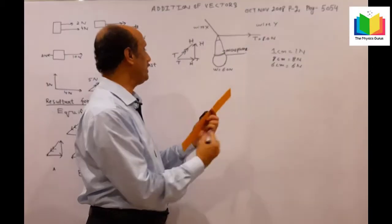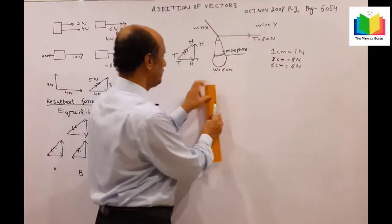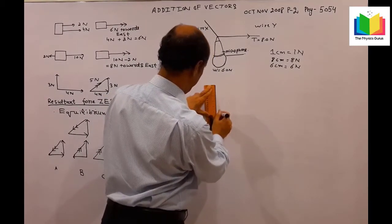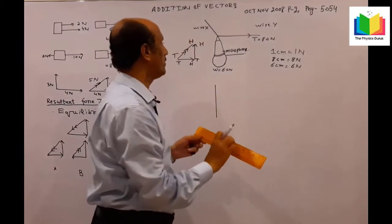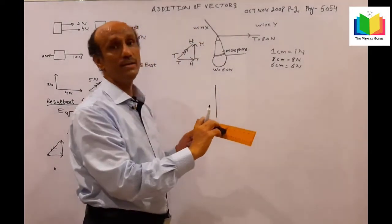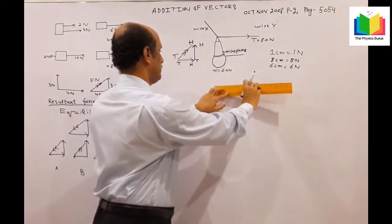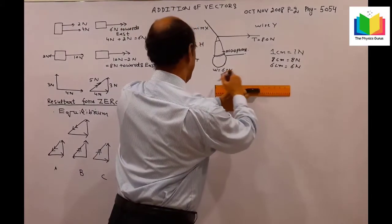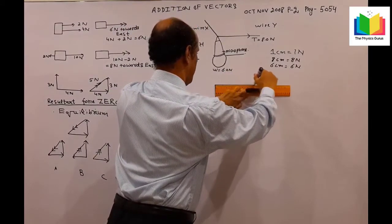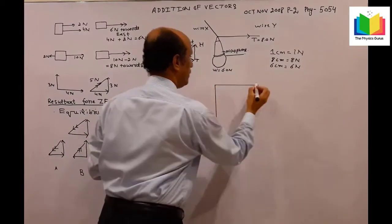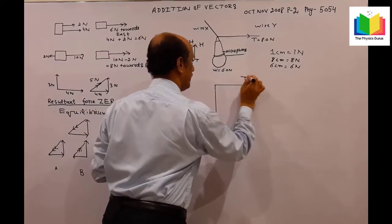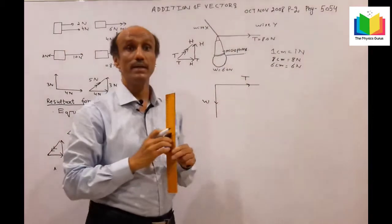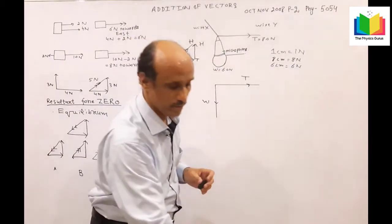Now we will draw the diagram. I will draw a line of 6 centimeters - 1, 2, 3, 4, 5, 6. Then I will make an angle of 90 degrees and draw the line up to 8 centimeters. I will label this as force T and this as force W or weight, acting in the downward direction. The arrow signs matter a lot.